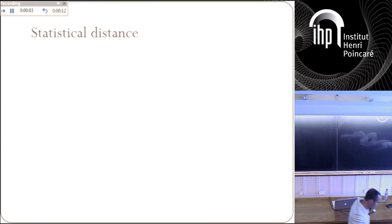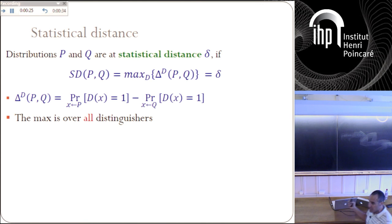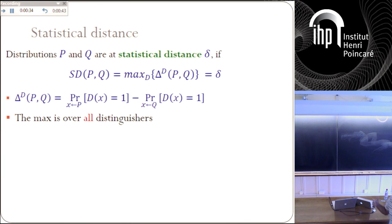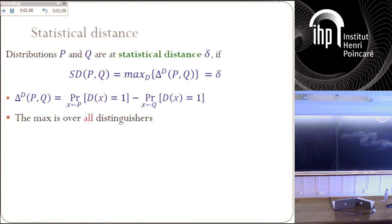Another notion we're going to use throughout this tutorial is statistical distance. Statistical distance between two distributions is formally the L1 norm between the distribution vectors. For this talk, I want to think about it differently. It's the distinguishing advantage of the best algorithm to distinguish between two distributions — specifically, the difference between the probability that the algorithm outputs one when it gets a sample from P, and the probability that it outputs one when it gets a sample from Q. If you take the best algorithm — unbounded — that tries to distinguish between two distributions, this equals the statistical distance.